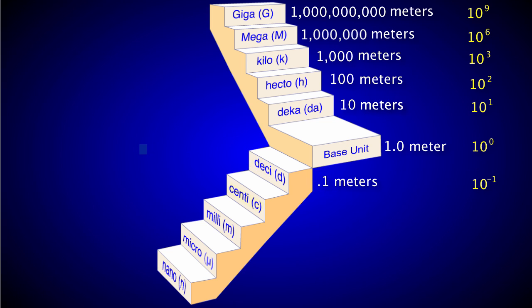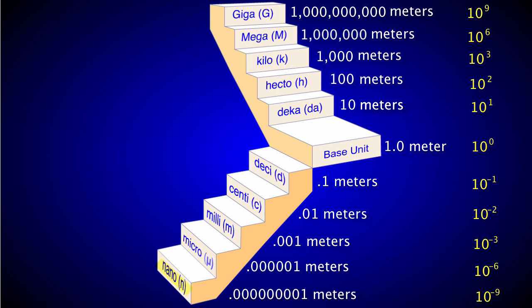Let's move on to centi. Centi means one hundredth, or 10 to the negative two. Milli means one thousandth, or 10 to the negative three. Okay, now we skip a few powers of 10 and move on to micro, which is 10 to the negative six, or one millionth. And nano, which is 10 to the negative nine, or one billionth.